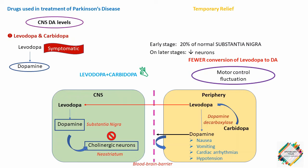Carbidopa is a dopamine decarboxylase inhibitor that diminishes the metabolism of levodopa in the periphery, thereby increasing the availability of levodopa to the CNS. The peripheral conversion of levodopa is blocked by carbidopa, so more levodopa is available to the CNS. The addition of carbidopa lowers the dose of levodopa needed by 4 to 5 fold and consequently decreases the severity of the side effects arising from the peripherally formed dopamine.